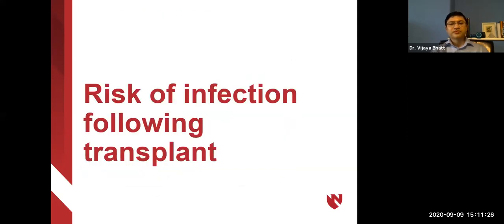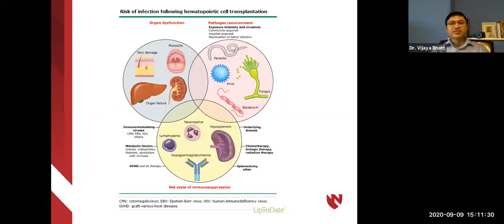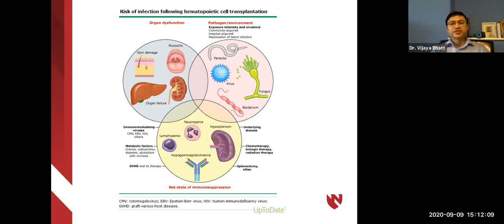Several factors affect risk of infection after transplant. Broad categories include organ dysfunction, exposure to certain pathogens, and the overall net state of immunosuppression. Mucositis, skin damage, and kidney or liver damage can increase infection risk. Certain pathogens are more likely to cause infection than others. Low blood count, including neutropenia, can also increase the risk of certain infections.